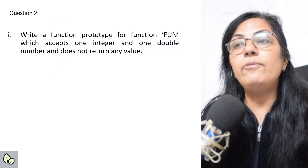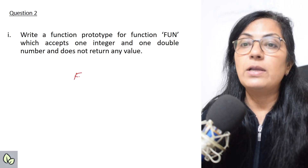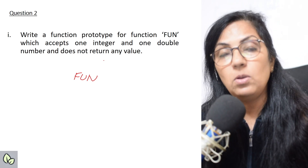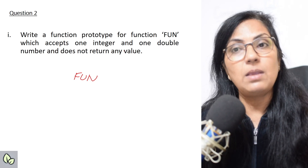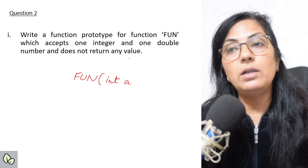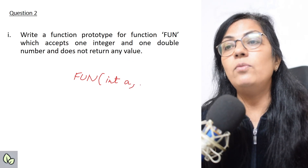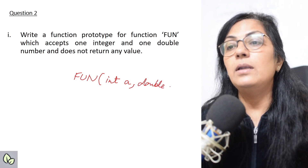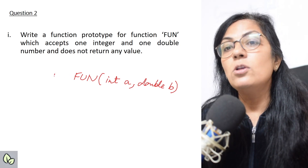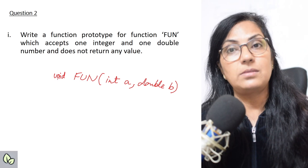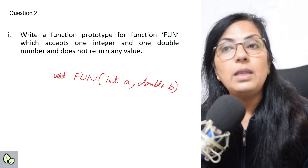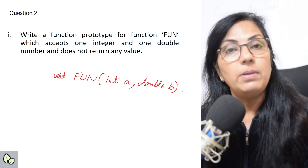Now moving to short questions. Write a function prototype for function fun which accepts one integer and two double parameters and does not return any value. Always write exactly as given — if it's in uppercase, write in uppercase. The answer is: void fun(int a, double b, double c). If the function does not return any value, void is mentioned. When writing a function prototype, never put a semicolon — only write the return type, function name, and parameters with their data types.